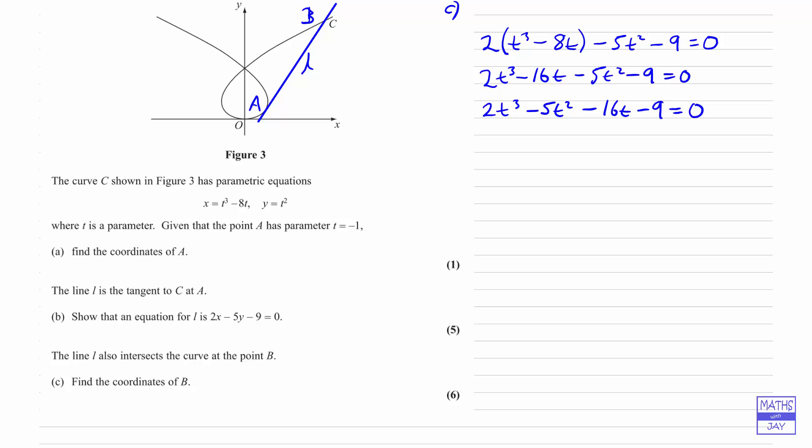Now, the important thing is to remember that we already know that this line L is a tangent at the point A, and at the point A we know the parameter T is minus 1. So in fact, because when T equals minus 1 we've got a tangent to the curve, we know that we are going to have this kind of thing when we factorize that cubic.